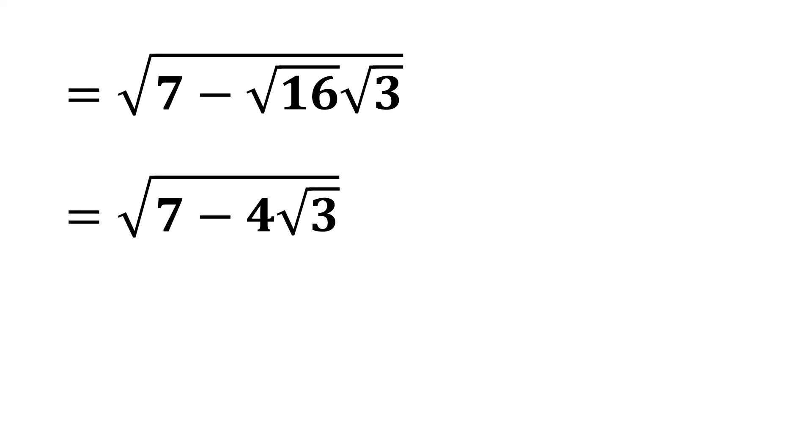Now, let's break the 7 into 4 plus 3. So we can rewrite the full expression as the square root of 4 plus 3 minus 4 times the square root of 3.